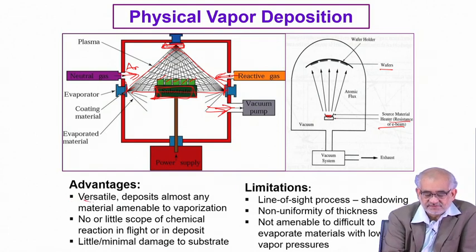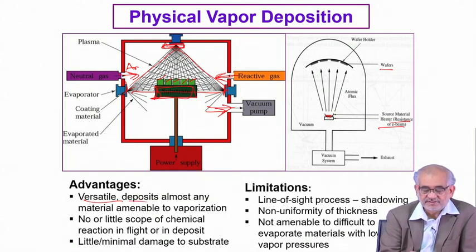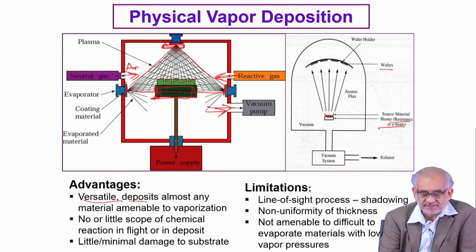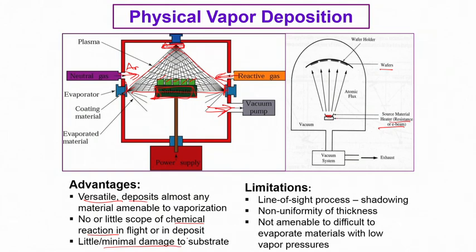This is a very versatile process — you can deposit almost any material that goes to the vapour state, with very little chance of chemical reaction. In fact, you can completely avoid chemical reaction in flight or in deposit, and there is very little damage to the substrate because the substrate is at room temperature or near room temperature. The coating is also very uniform because the components are immersed in the vapour atmosphere.